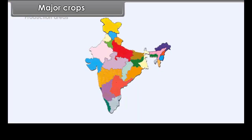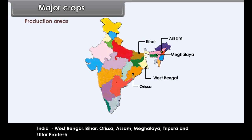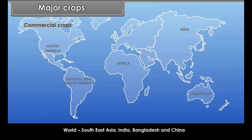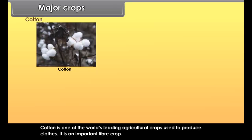Jute production areas in India include West Bengal, Bihar, Orissa, Assam, Meghalaya, Tripura and Uttar Pradesh. World producers include Southeast Asia, India, Bangladesh and China. Cotton is one of the world's leading agricultural crops used to produce clothes.